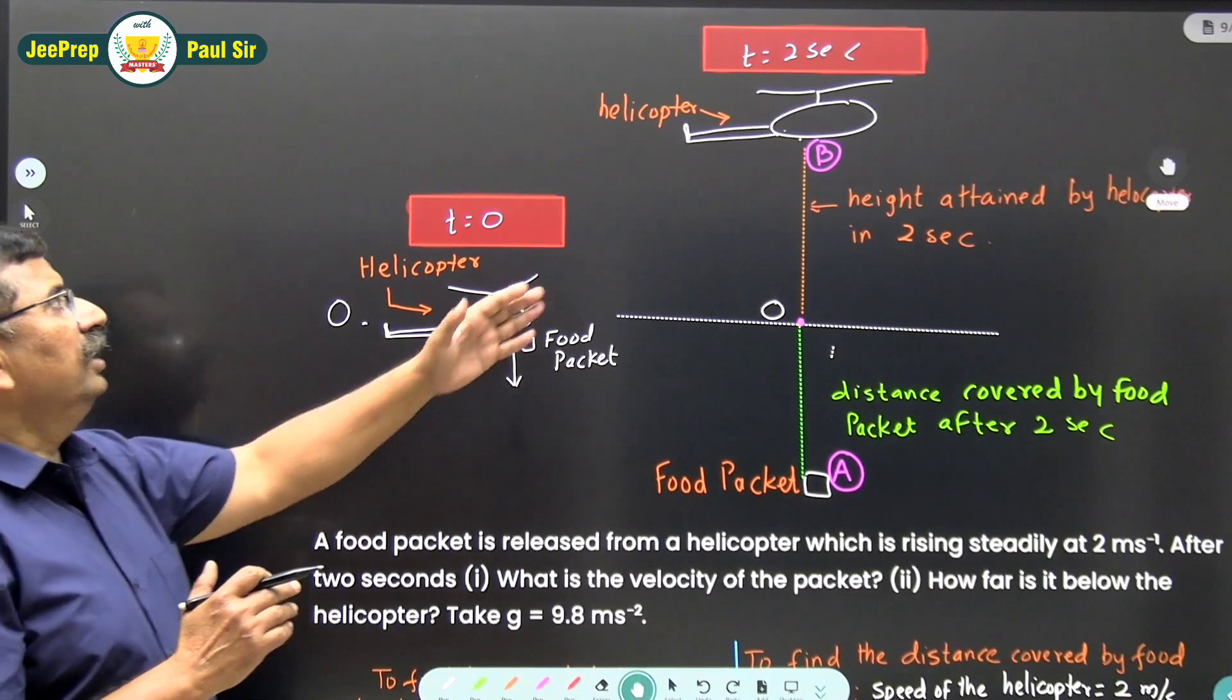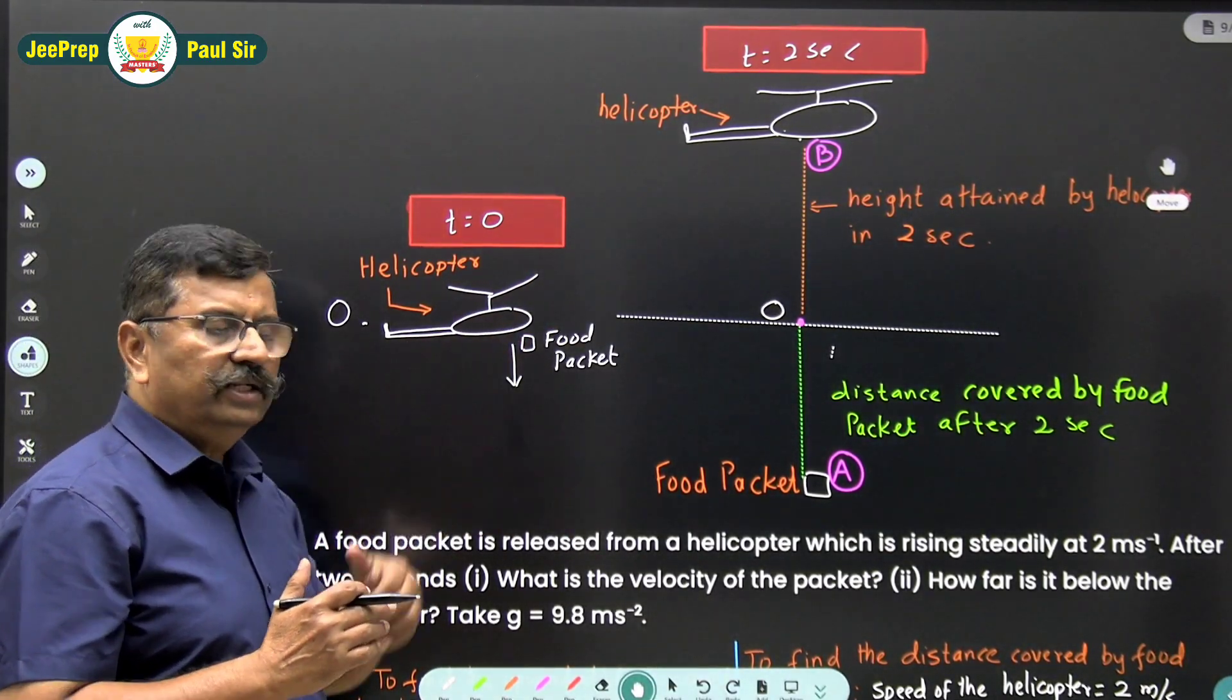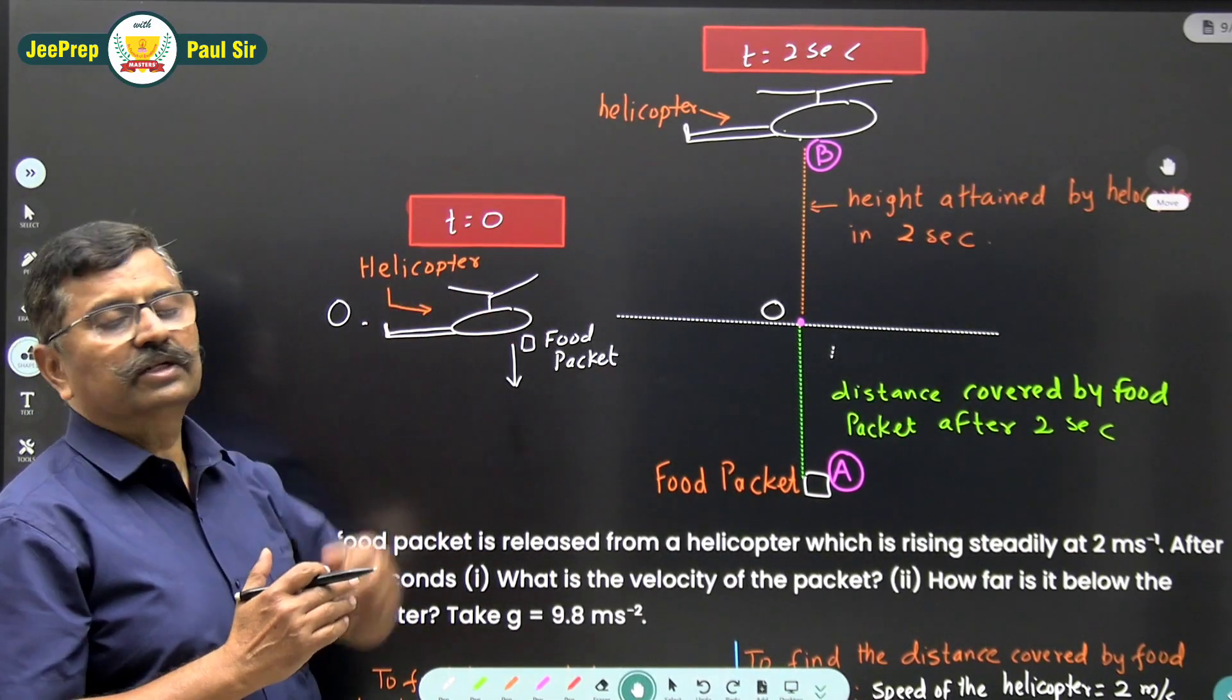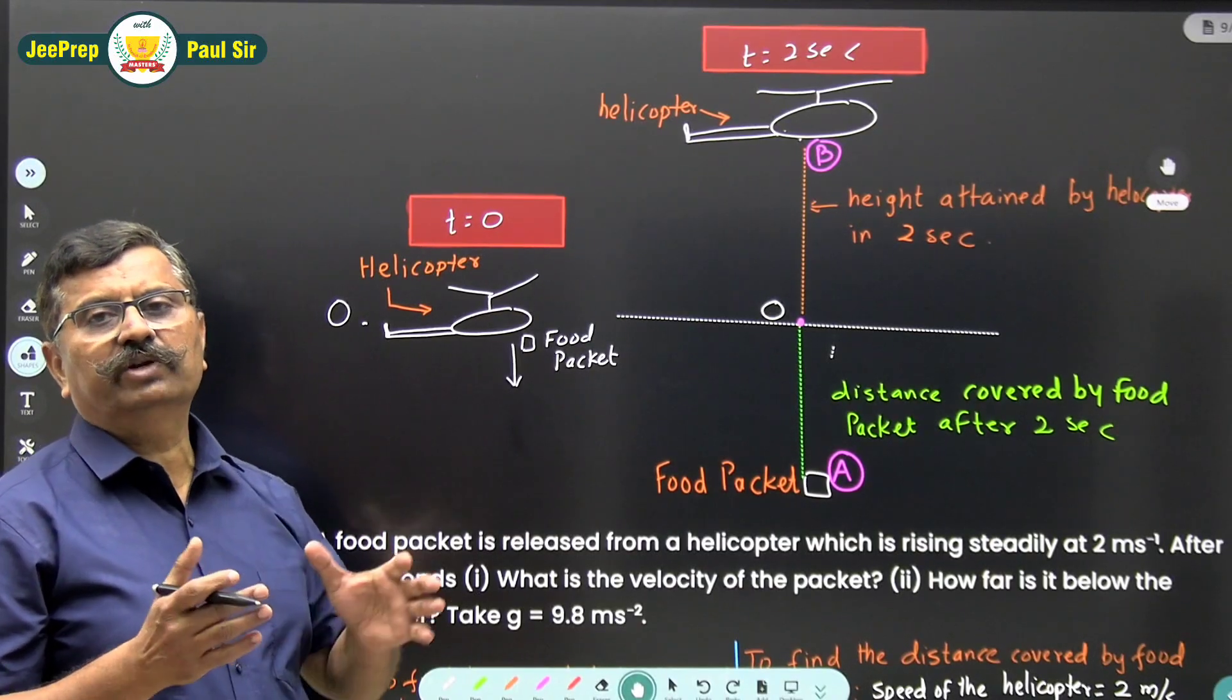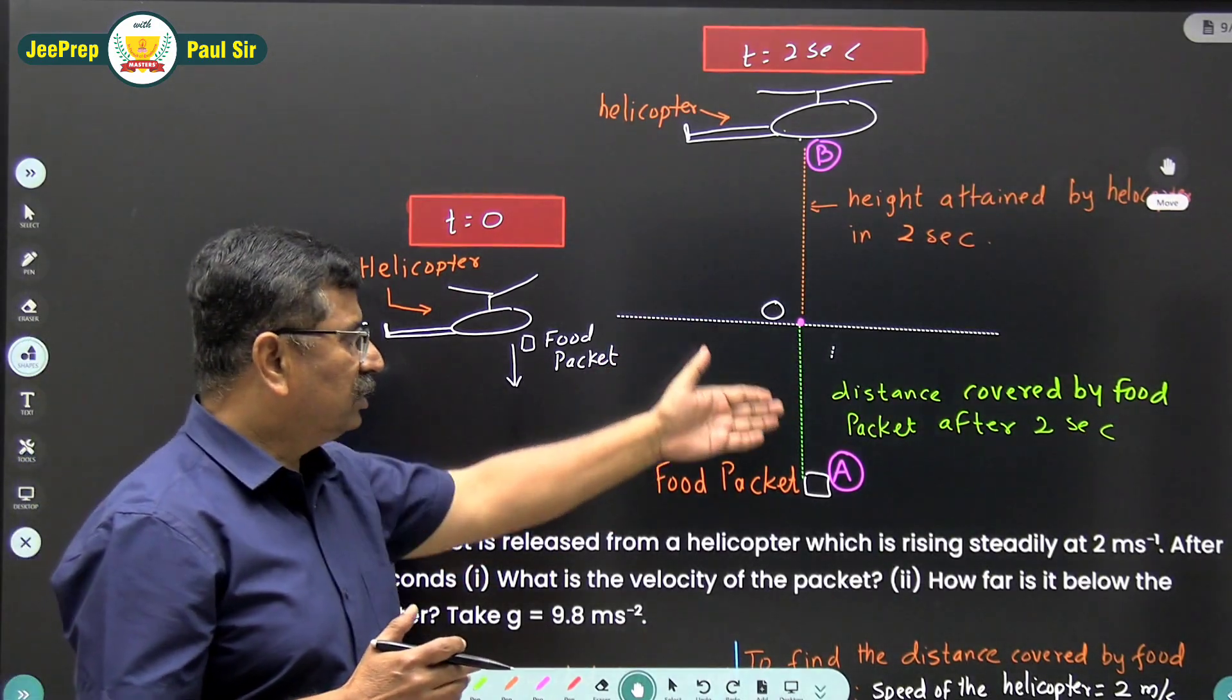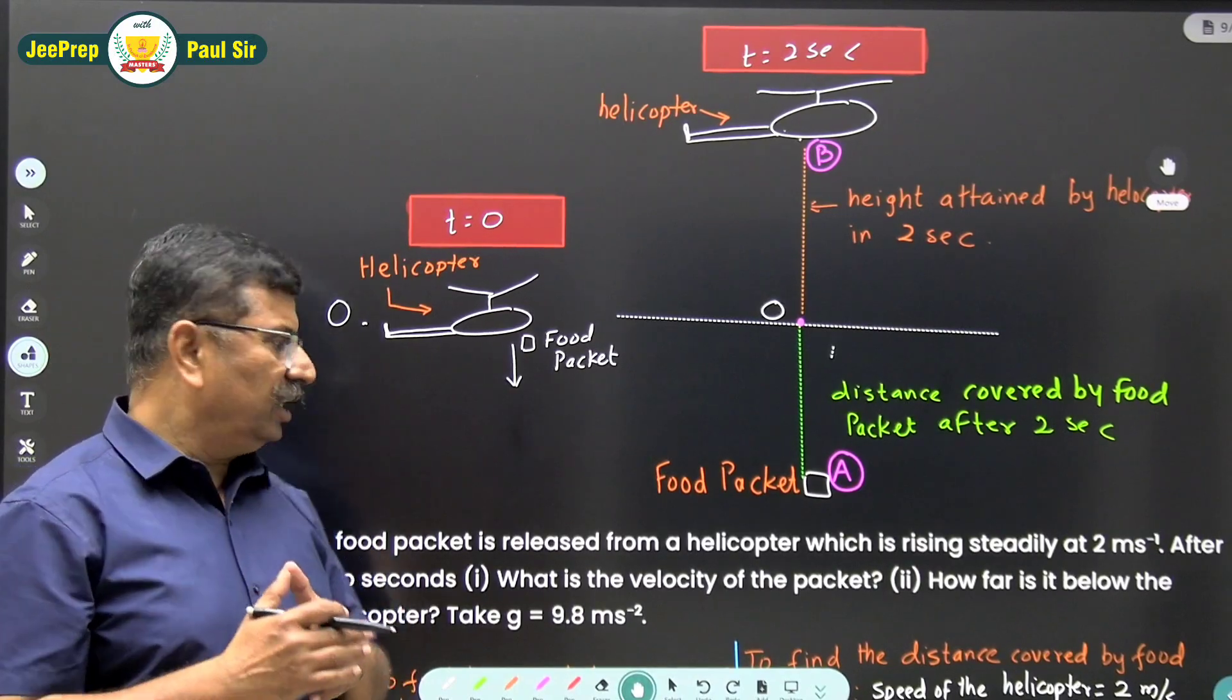Now see, in these 2 seconds, the food packet attains a certain downward distance while the helicopter attains a certain upward distance. So the total distance between the helicopter and the food packet will be this downward distance OA plus this upward distance OB. Before that,